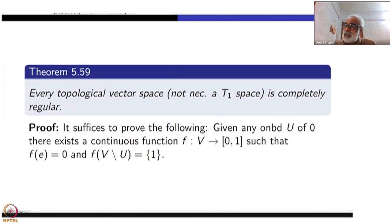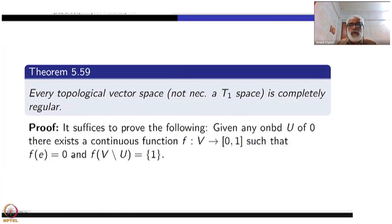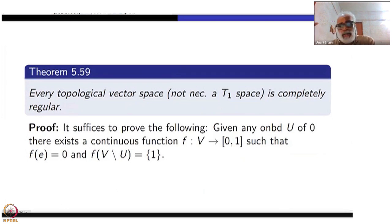Given any point and a closed subset, we must find a continuous function separating them. But in a topological vector space, the point can always be specialized to 0. Given any neighborhood U of 0, we must find a continuous function f from V to [0,1] such that f(0) = 0 and f maps the complement of U to 1.